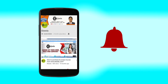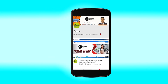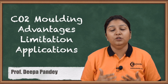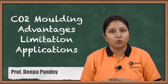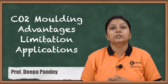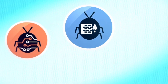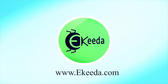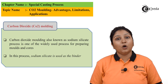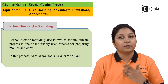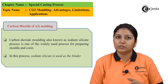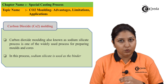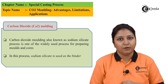Hello friends, today we are going to see a special casting process known as carbon dioxide molding — how it is done we are going to see in this video. CO2 molding is widely used for making cores as well as molds. In this process, sodium silicate is used which acts as a binder.